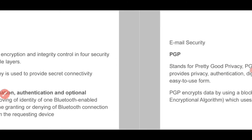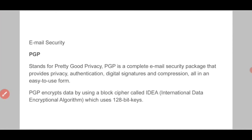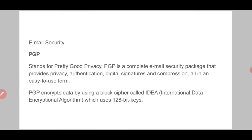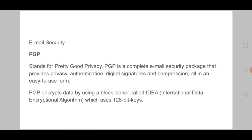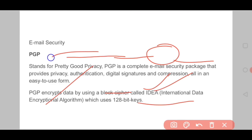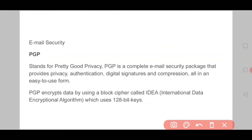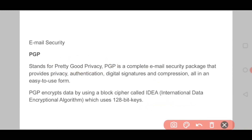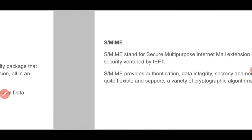Next is email security, which is very important. Basically, you have two types: PGP and MIME. PGP stands for Pretty Good Privacy — a very important term. It is a complete email security package that provides privacy, authentication, digital signature, and compression, all in an easy-to-use form. PGP encrypts data by using a block cipher called IDEA — International Data Encryption Algorithm — which uses 128-bit keys and asymmetric keys.